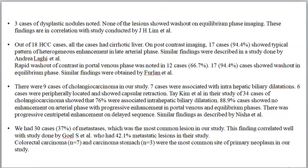There were nine cases of cholangiocarcinoma; seven were associated with intrahepatic biliary radical dilatation and six showed capsular retraction. Takehim et al., in a study of 34 cholangiocarcinoma cases, showed 76% were associated with intrahepatic biliary radical dilatation. 88.9% of cases showed no enhancement on the arterial phase with progressive enhancement in portal venous and equilibrium phases and progressive centripetal enhancement on delayed sequences, similar to findings described by Nisha et al. There were 30 cases of metastasis, the most common lesion, correlating with Goel et al. who had 42.1% metastatic lesions. Colorectal carcinoma and carcinoma of the stomach were the most common primary neoplasms.